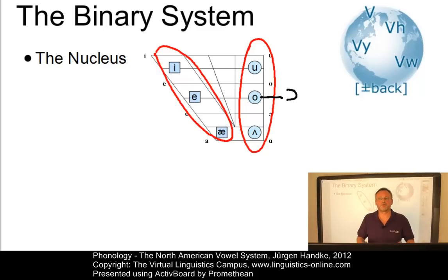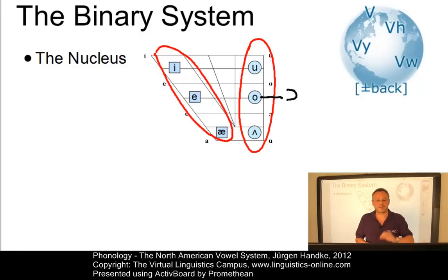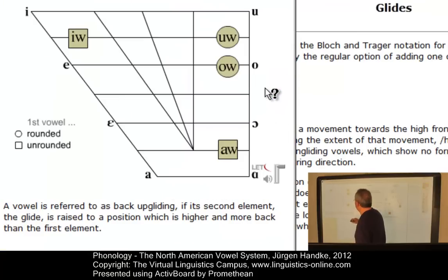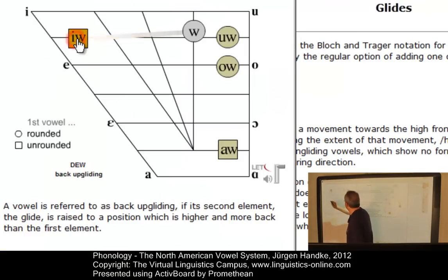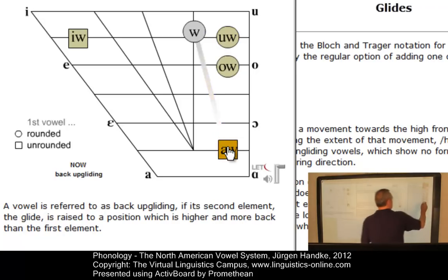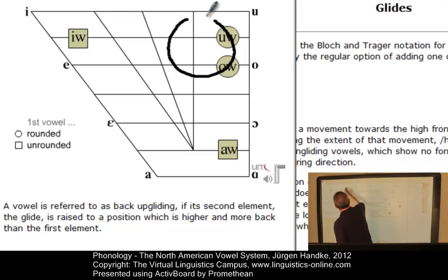The second component of this binary system is the glide. To each nucleus, one of the following three glides can be added. For example, we have a back-up glide in the following words: 'do,' 'now,' 'bow,' 'to.' They all have in common that the second element of the vowel glides up to a back-vowel position.